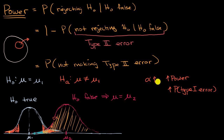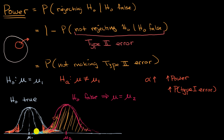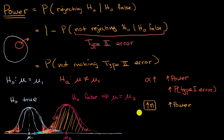Another way to increase your power is to increase your sample size. If you increase n, both sampling distributions will get narrower. When both sampling distributions get narrower, the situation where you are not rejecting your null hypothesis even though you should has a lot less area — there's a lot less overlap between the two sampling distributions. Increasing n is, in general, always a good thing if you can do it.